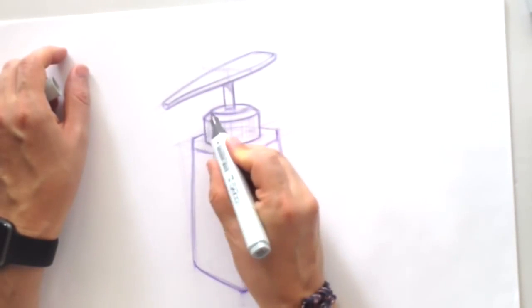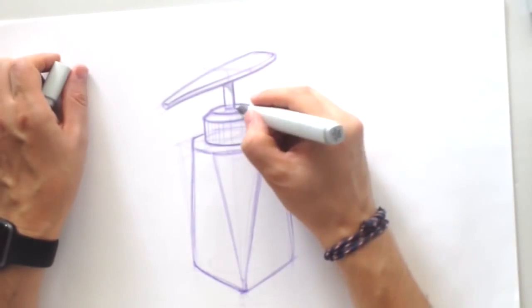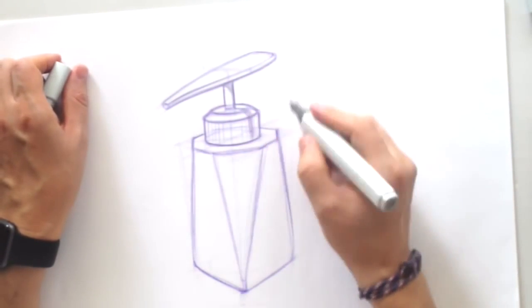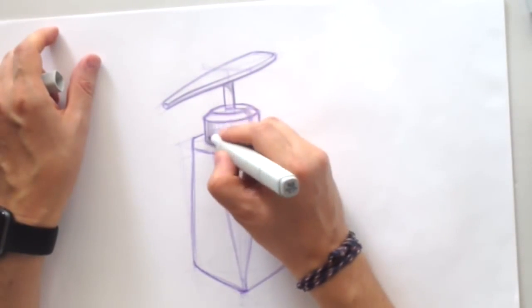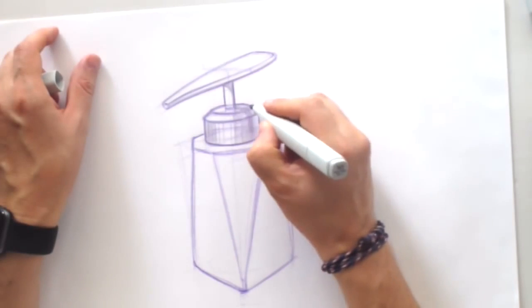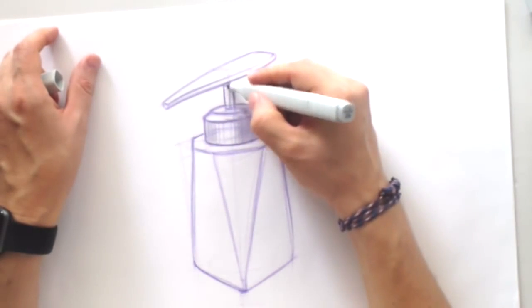To adjust those lines, I'm using the cool tone of the Copic marker. Something about number four, grey tone.